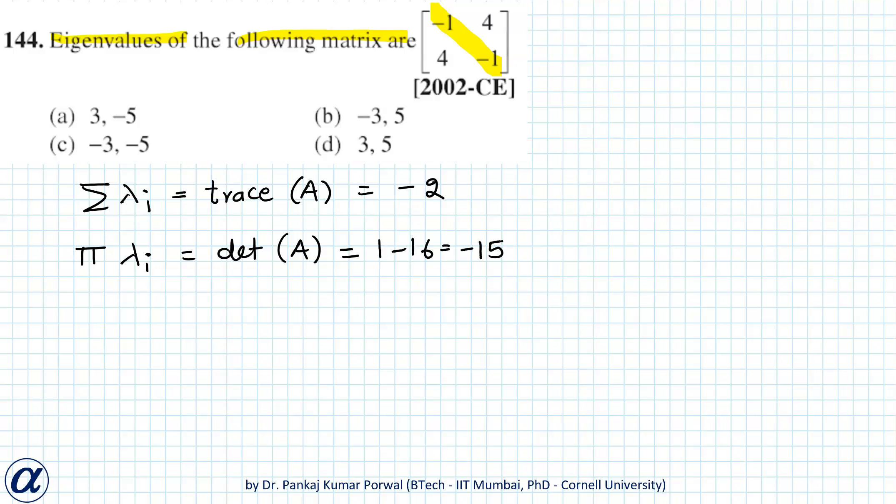We check all the choices and pick the answer for which sum of eigenvalues is minus two and product is minus 15. Looking at the choices, A is the correct answer.